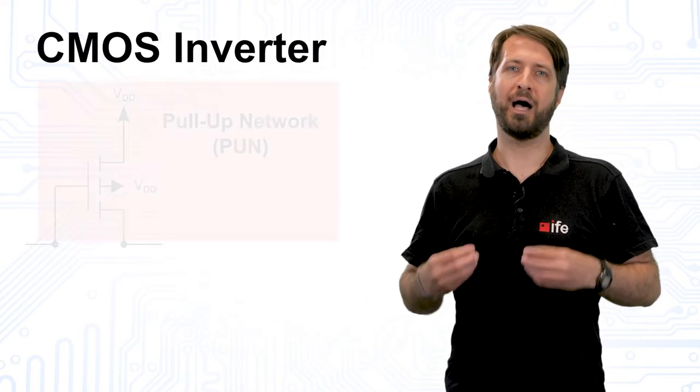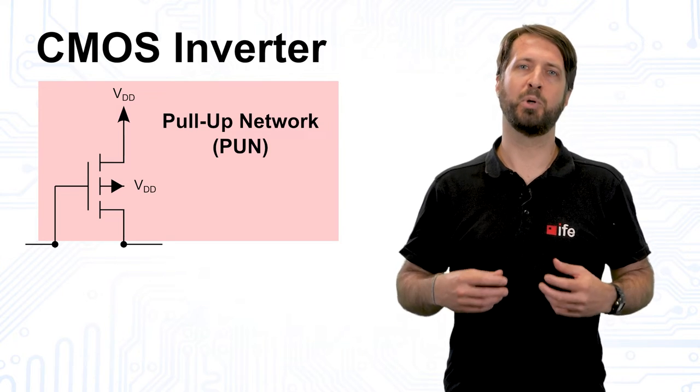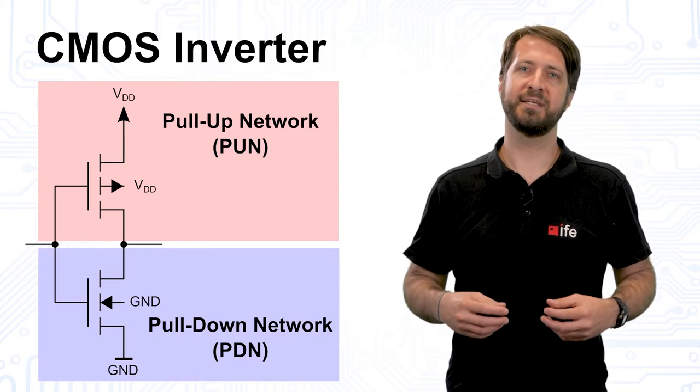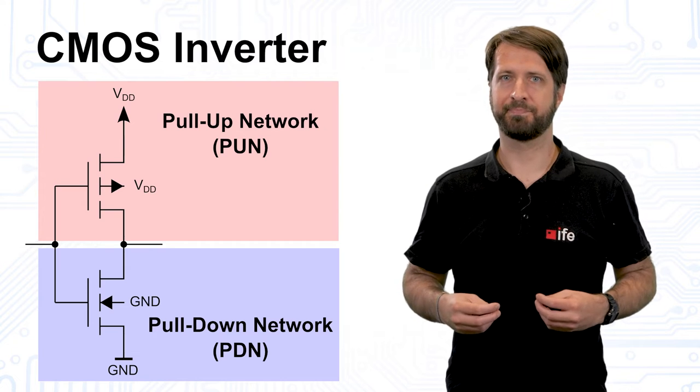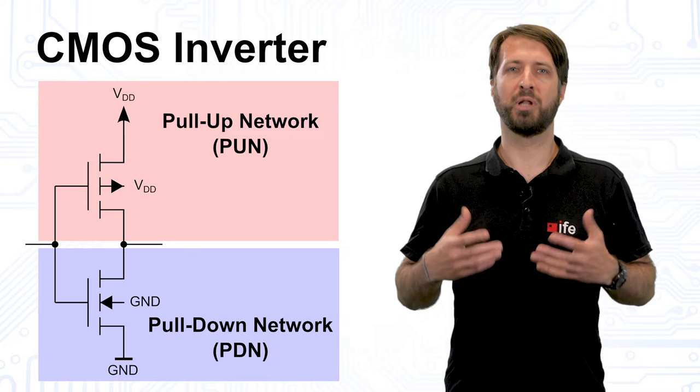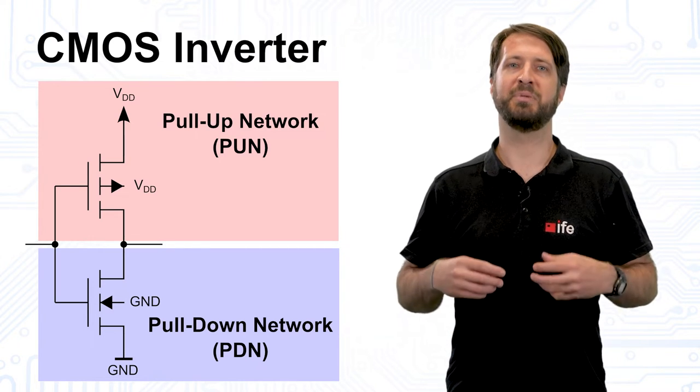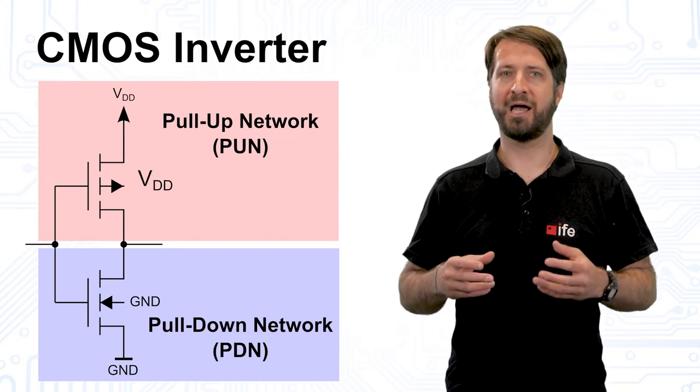As we have seen in the last video, CMOS logic circuits are always divided into a pull-up consisting of PMOS and a complementary pull-down network consisting of NMOS transistors. The PMOS transistors are always located in the pull-up part of the circuit, since their bulk connection can be directly connected to the supply voltage here.